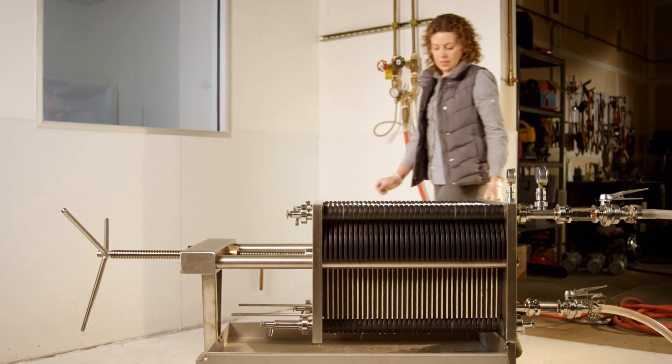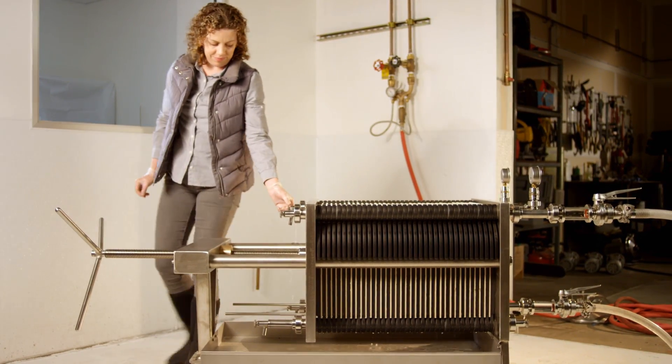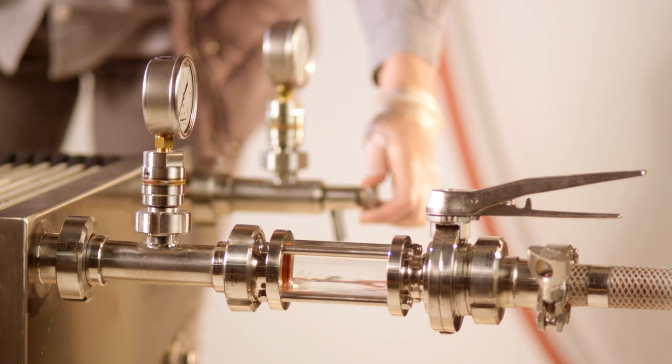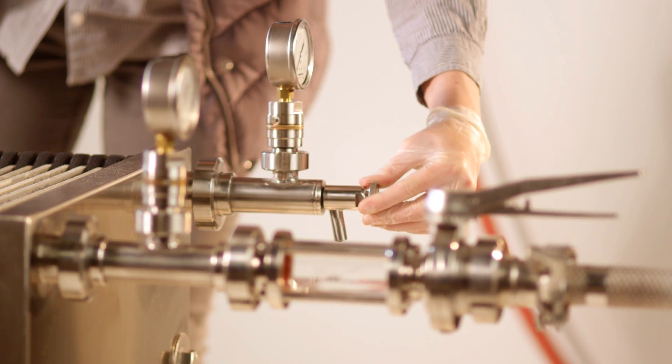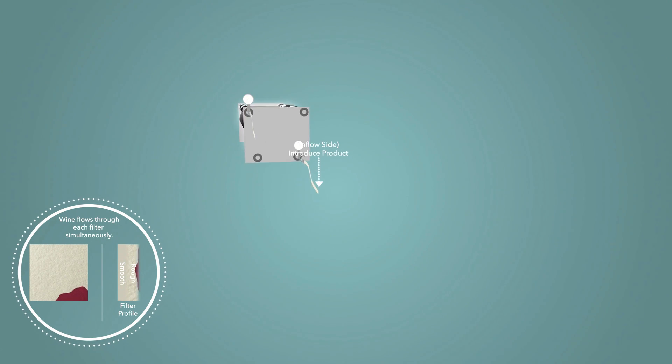Close all valves and attach product lines. Open a vent valve on the inlet side of the filter. Product will discharge from vent when inlet side is full. Slowly introduce product.